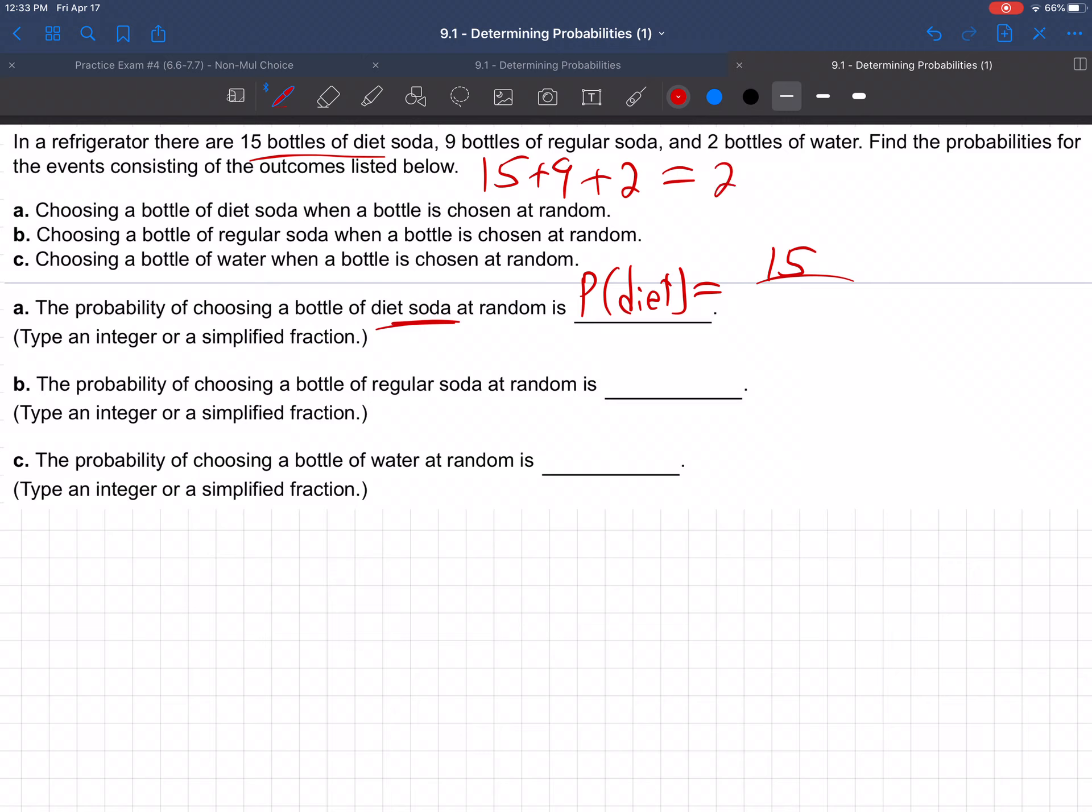11, 26 total, so that would be 15 over 26, and there's the answer to the first question.